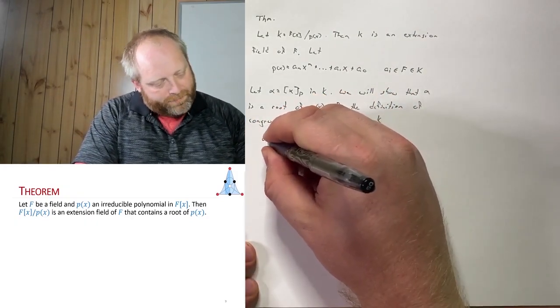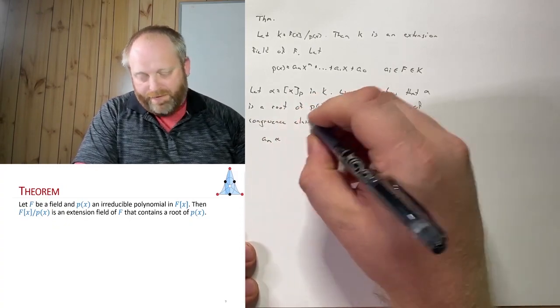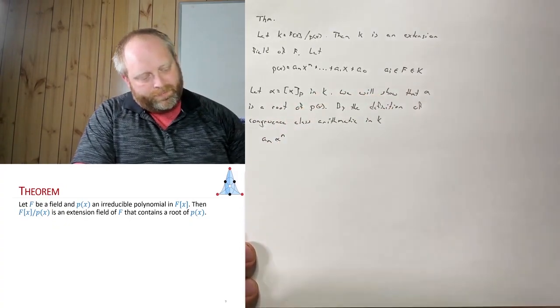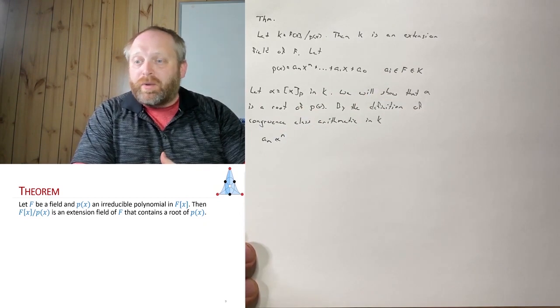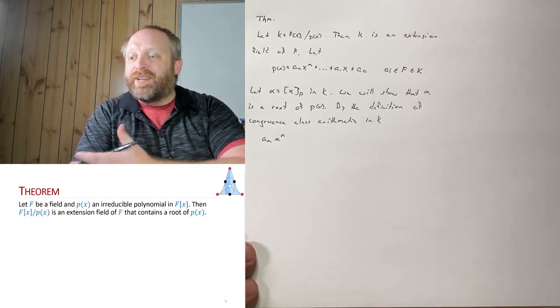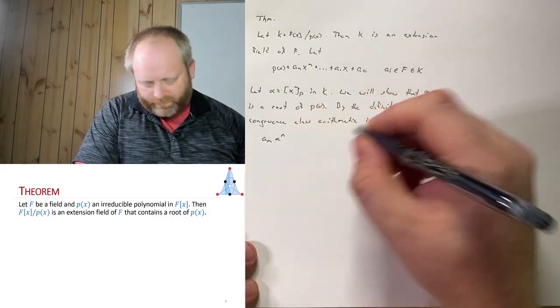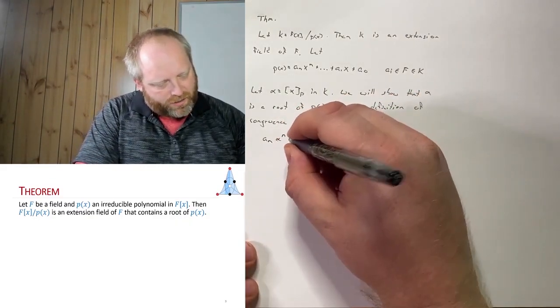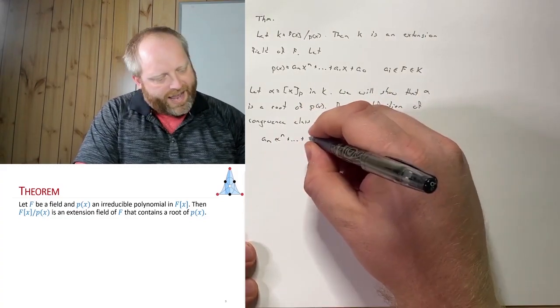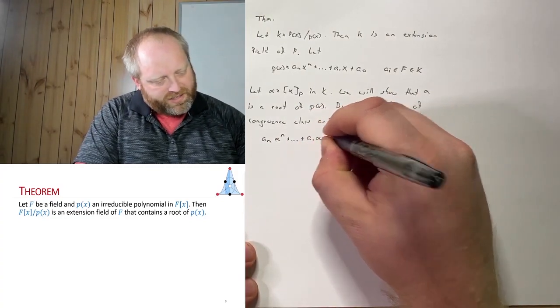So I have a_n alpha^n. All we're doing at this point to the polynomial, I'm just substituting for x, I'm substituting alpha. And I want to be able to show that alpha is in fact a root. So alpha^n plus all the way down to a_1 alpha plus a_0.